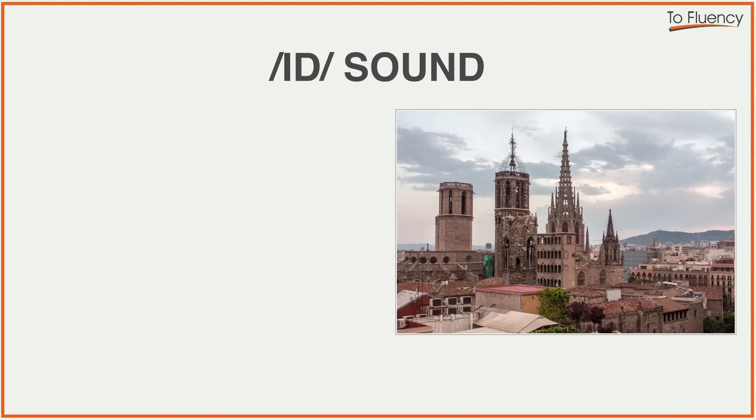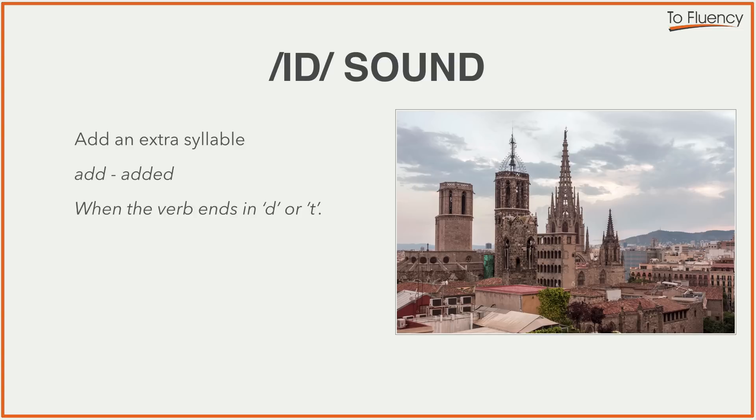Let's have a look at the first way. We'll start with the /ɪd/ sound. When we use this sound, we add an extra syllable. Here is an example: 'add' becomes 'added.' And we use this sound when the verb ends in a D or a T. So it's quite a simple one to remember — when the verb ends in a D or a T, we use this sound.